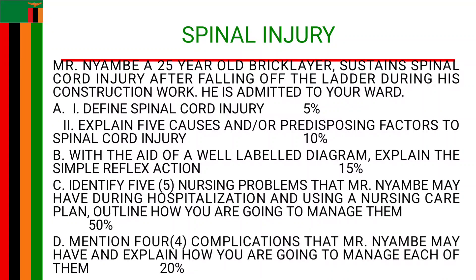We can define spinal cord injury as damage to any part of the spinal cord or nerve endings of the spinal canal, characterized by stiff muscles, reduced sensation on touch, and reduced physical mobility. When we talk about injury to the spinal cord, we mean injury to any portion — from the cervical region all the way to the thoracic and lumbar regions.